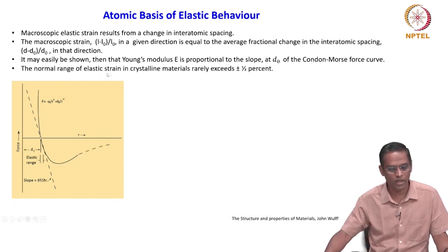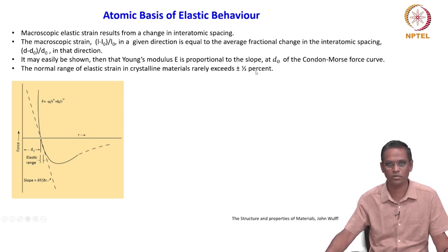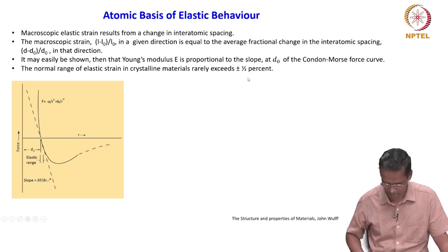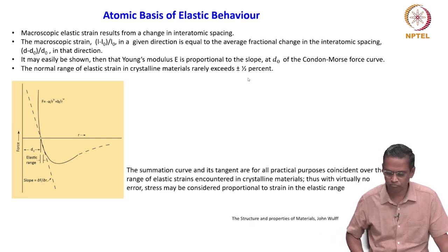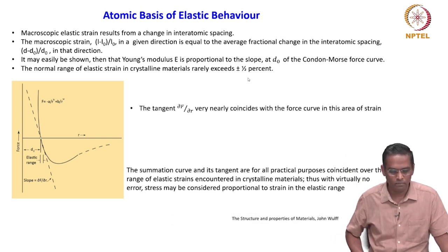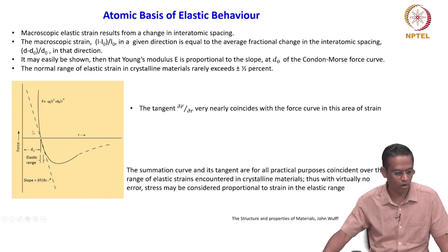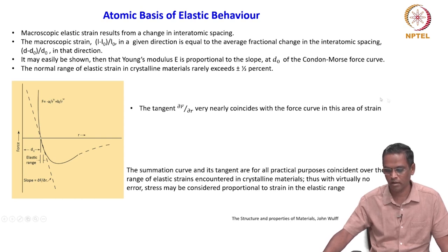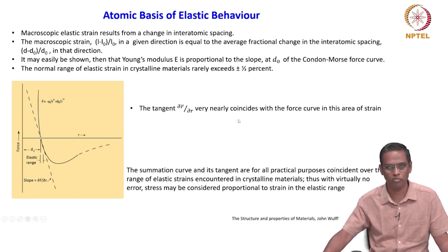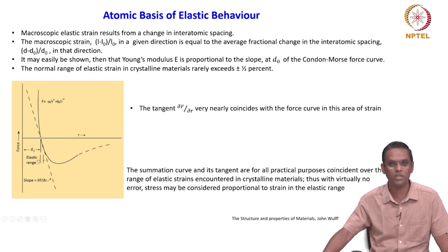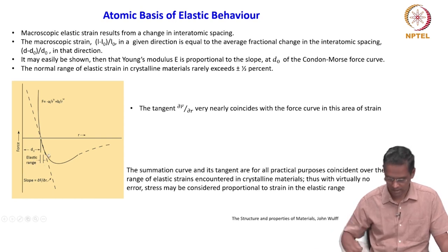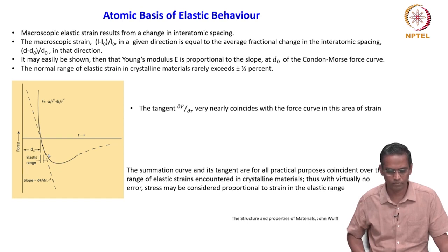The normal range of elastic strain in crystalline materials rarely exceeds plus or minus half a percent — this is a useful rule of thumb. The tangent dF/dR here very nearly coincides with the force curve in this area of strain, which confirms that this assumption is valid. The elastic range really coincides with this region.